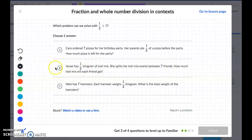So right now, that looks like our best answer. Walt has 7 hamsters. Each hamster weighs half a kilogram. What is the total weight of the hamsters? That's going to be 7 hamsters times half a kilogram. So Jenay with the trail mix is our correct answer.